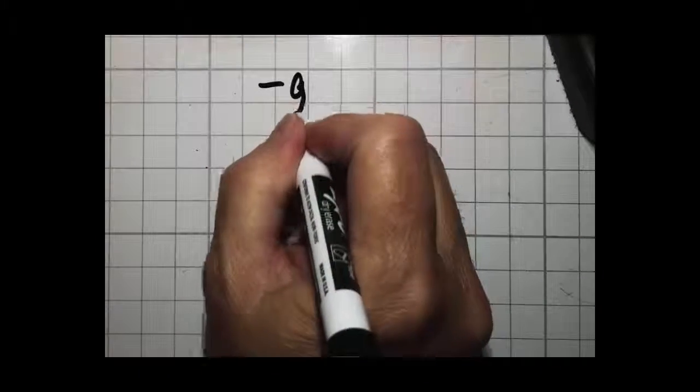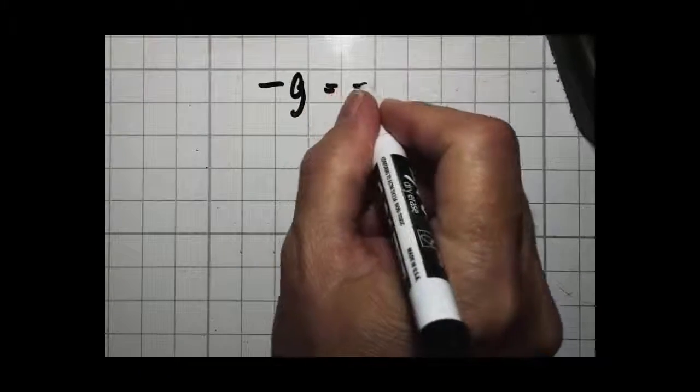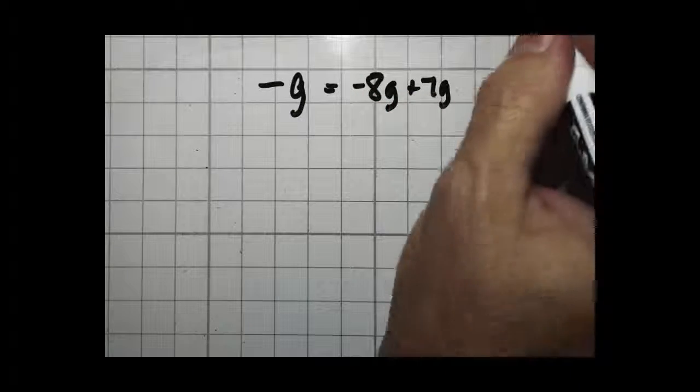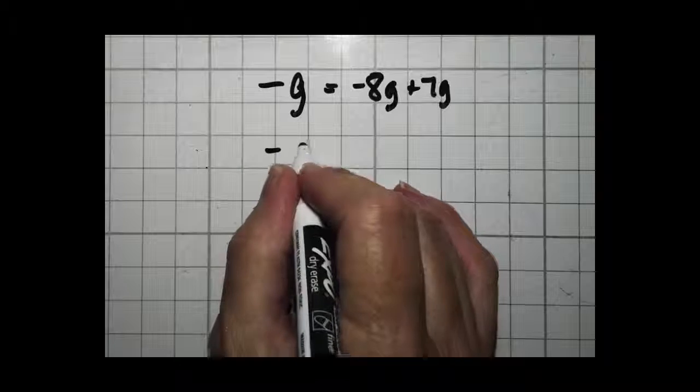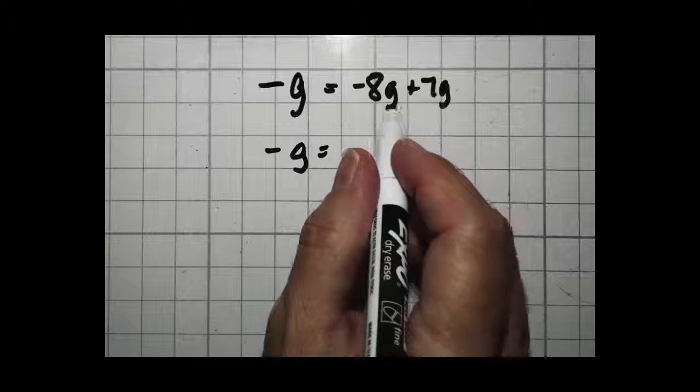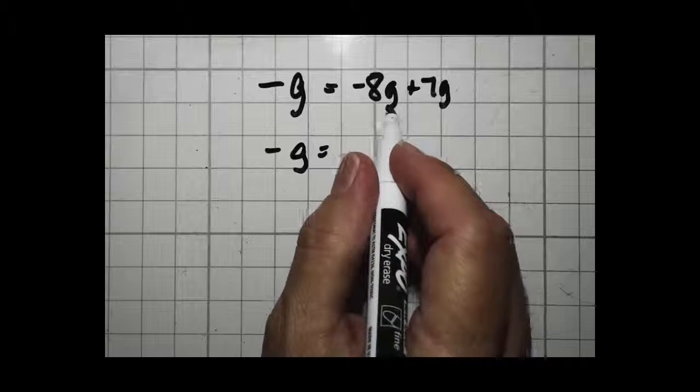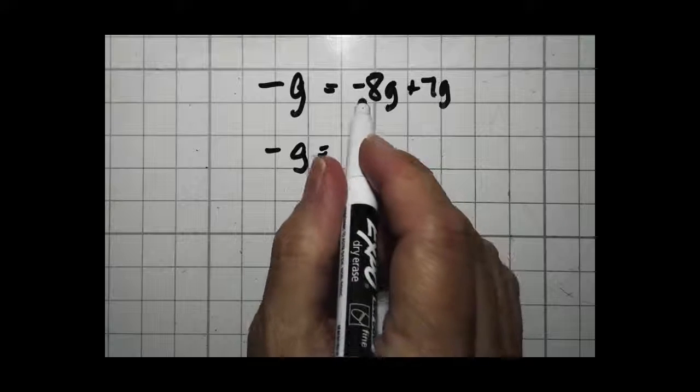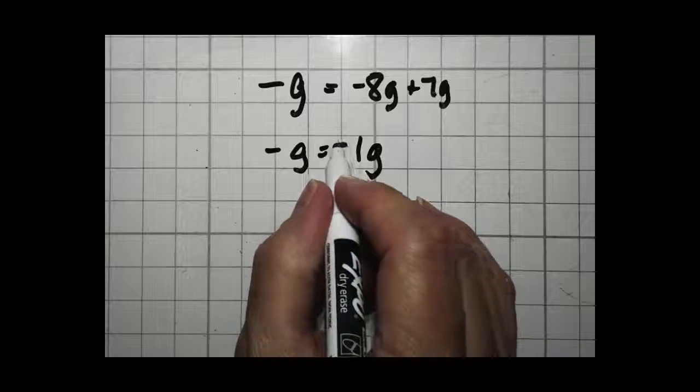How about another problem? Negative g equals negative 8g plus 7g. Again, when we're solving problems, we want to combine like terms initially. So we have negative 8g plus 7g. The signs are different. We're going to subtract. 8 minus 7 is 1. We keep the sign of the bigger number. Since 8 is bigger than 7, it's negative 1.